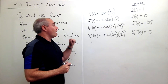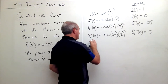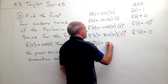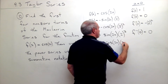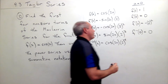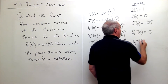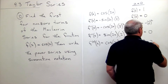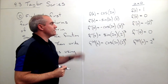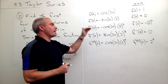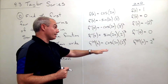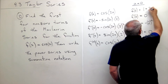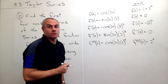We're starting to see a pattern. The next derivative, f quadruple prime of x, would be cosine of 2x times 2 to the fourth. So f quadruple prime of zero would be one times 2 to the fourth, which is just 2 to the fourth. So the pattern is: one, zero, negative 2 squared, zero, 2 to the fourth. And by the way, one could also be written as 2 to the zero, if that's helpful.